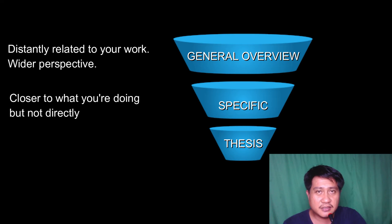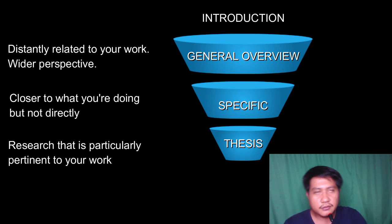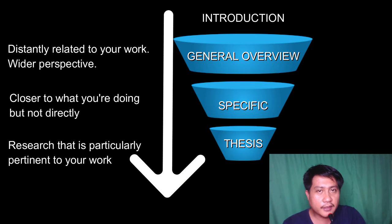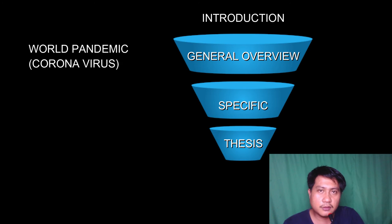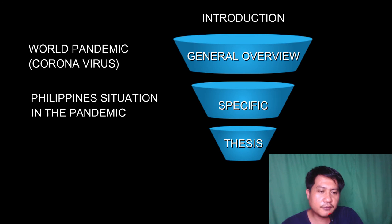For example, if your topic is about coronavirus and your research is introducing a new way to suppress the contagious effect of coronavirus, in your introduction you should first talk about the current situation of coronavirus in a general manner — what is happening around the world. After that, you narrow it — for example, highlight specific information about the Philippines if you are living there. From the general world perspective of coronavirus, you transfer the topic to a much closer, more specific overview.